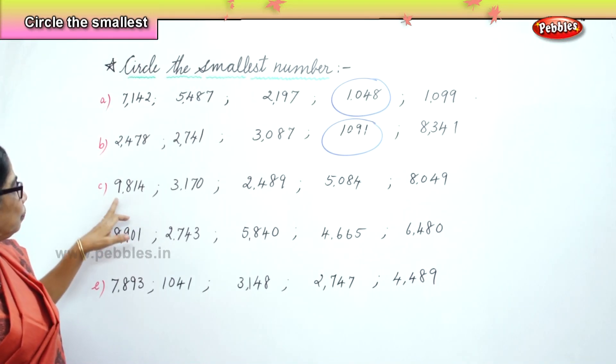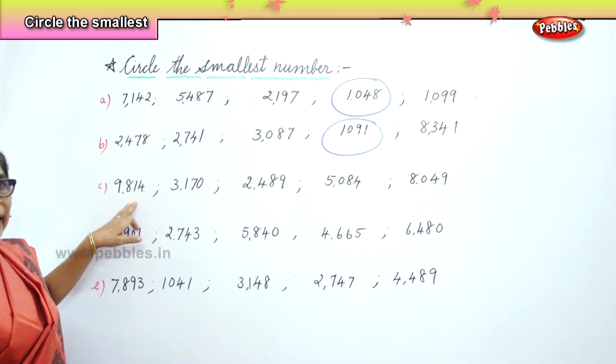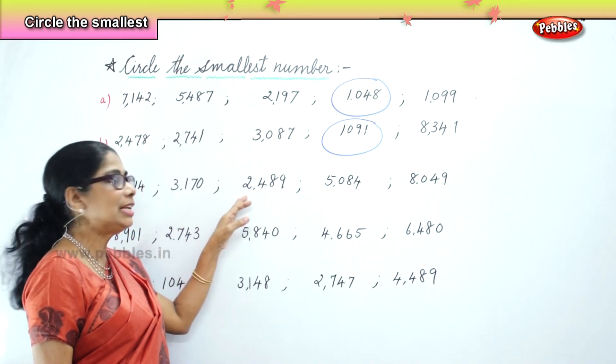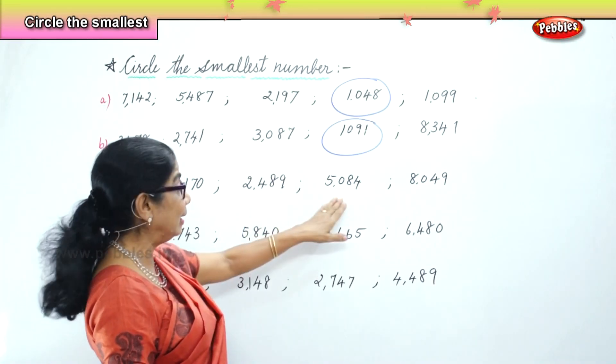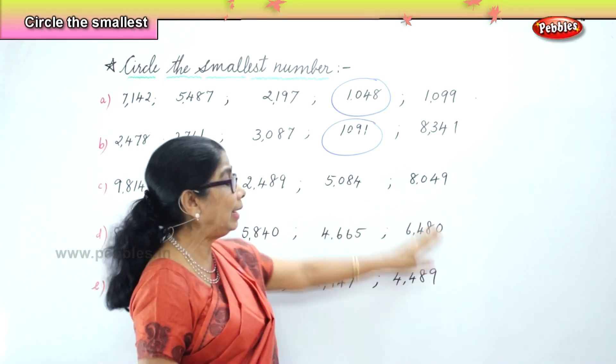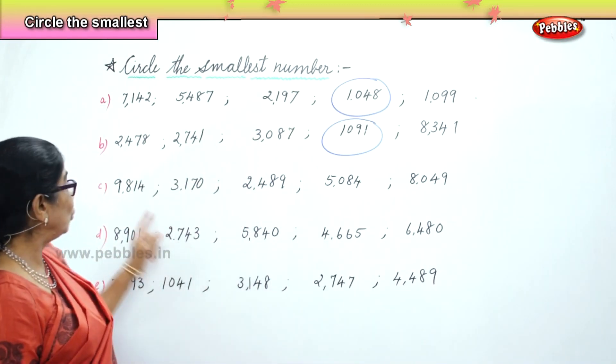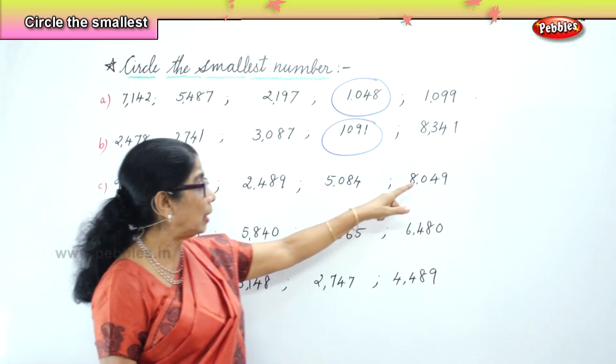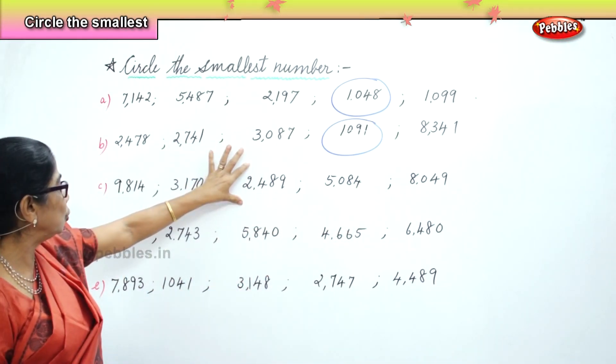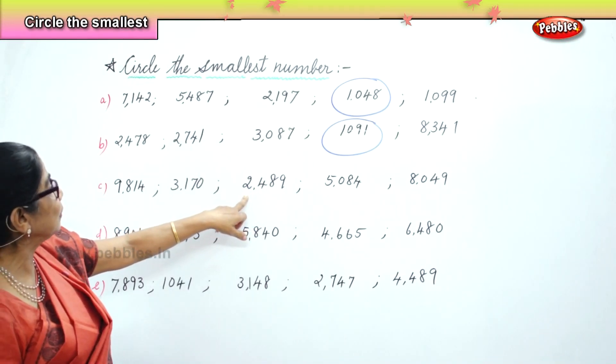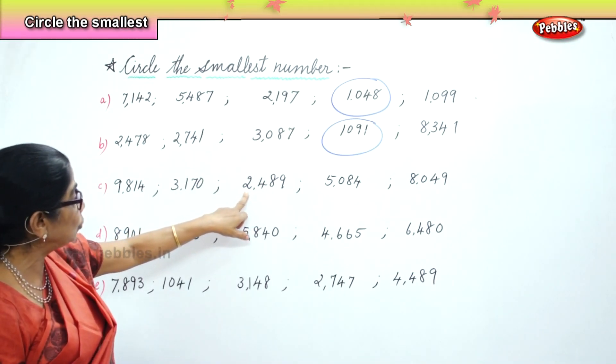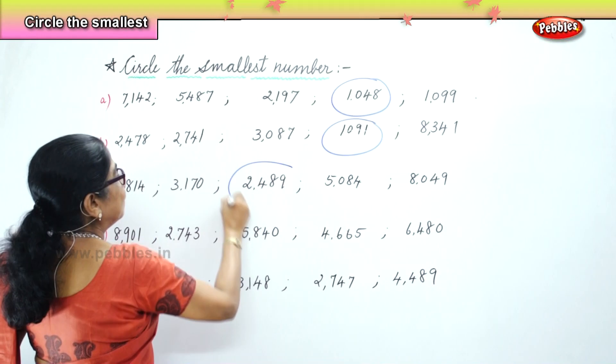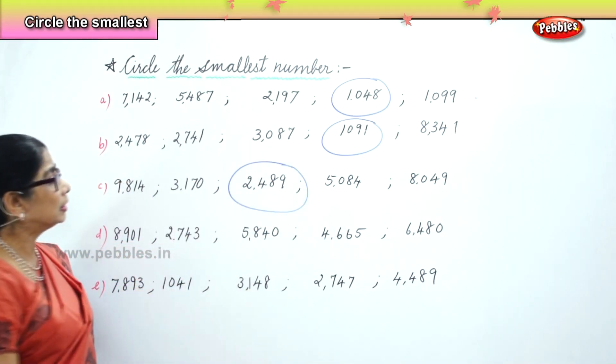The next set: 9,814, 3,170, 2,489, 5,084, 8,049. So you have 9,000, 3,000, 2,000, 5,000, 8,000. Among all this, 2,000 seems to be the smallest of the five. You have 2,489 is the smallest of the five numbers here. So we circle the smallest number.